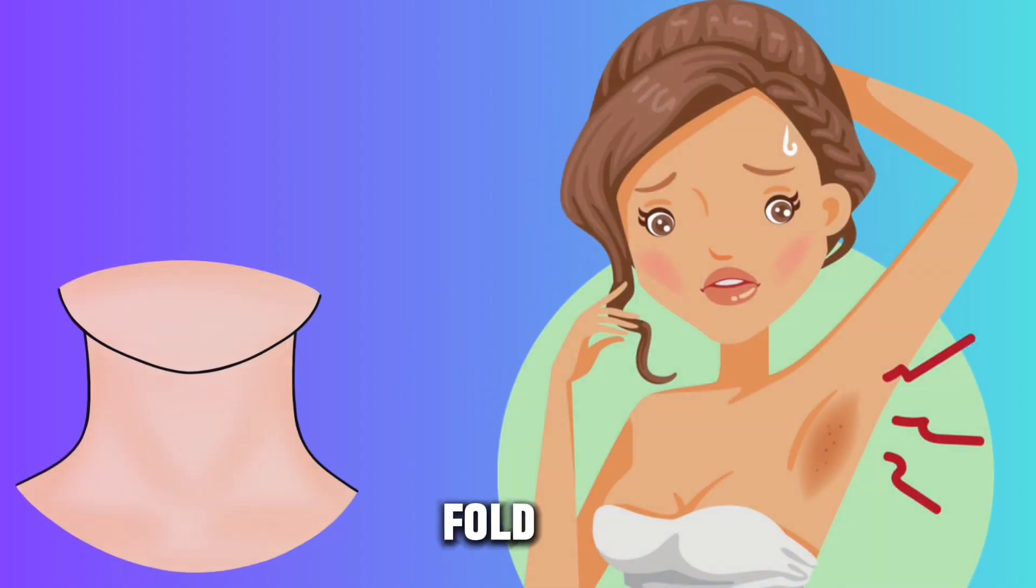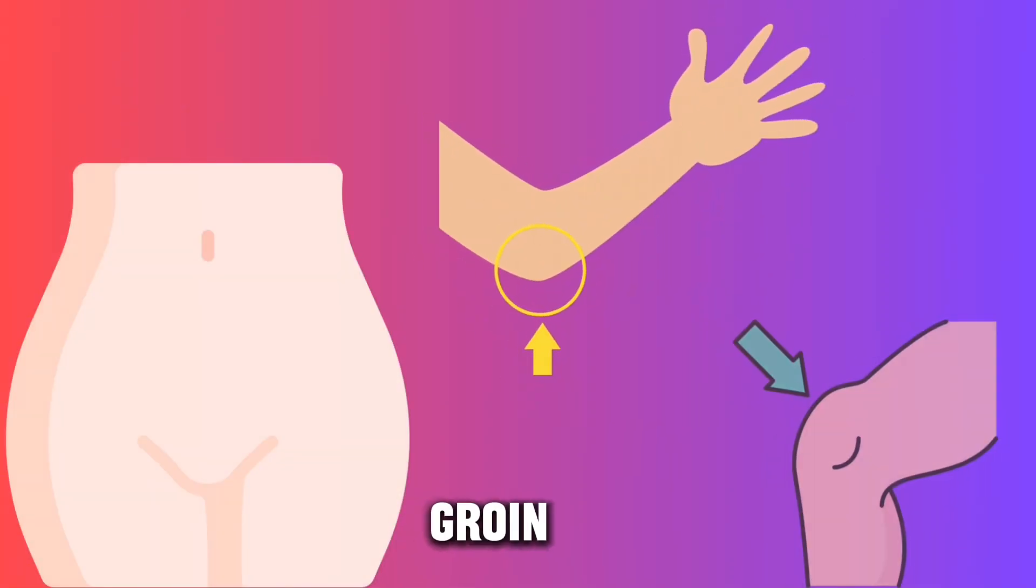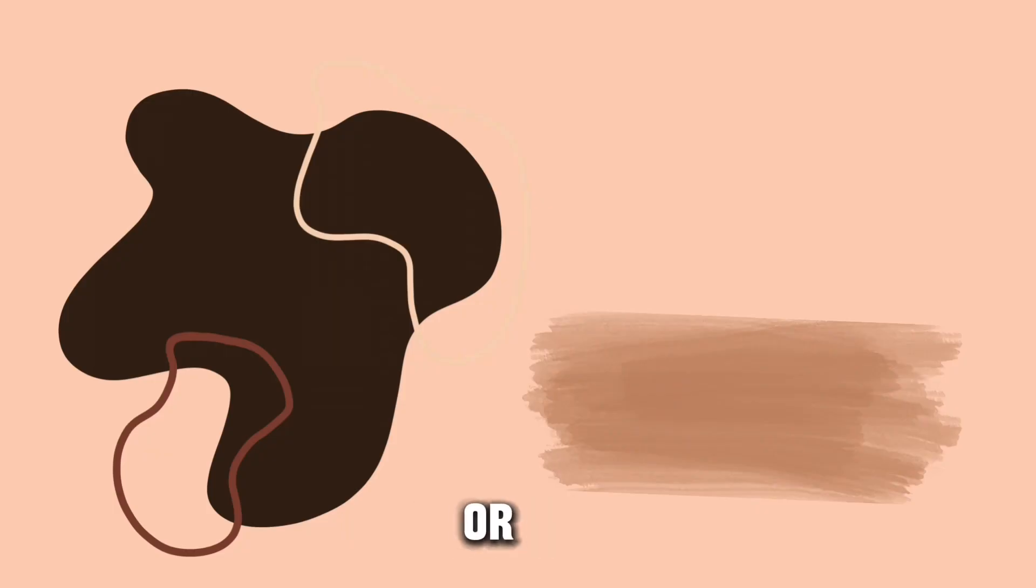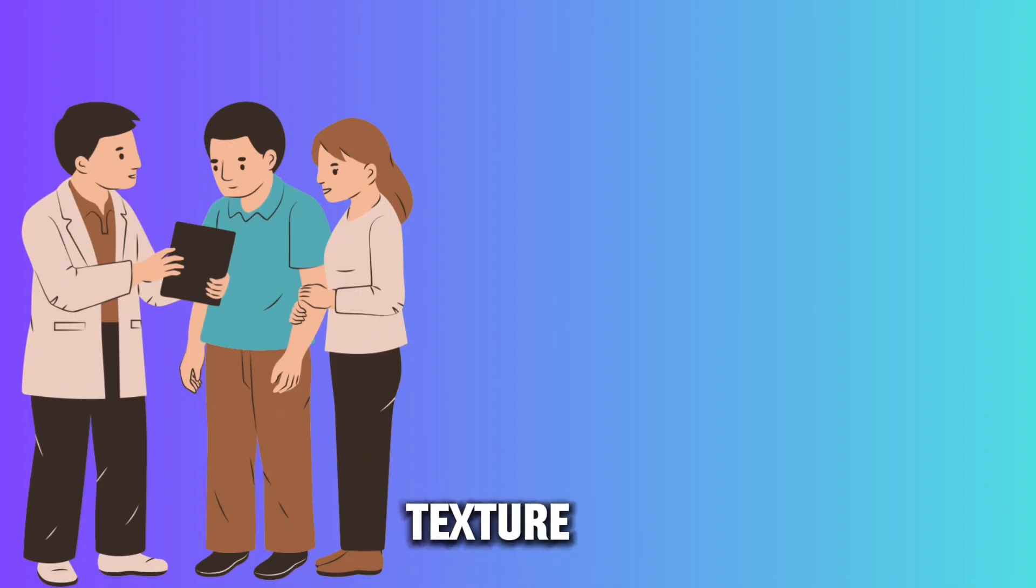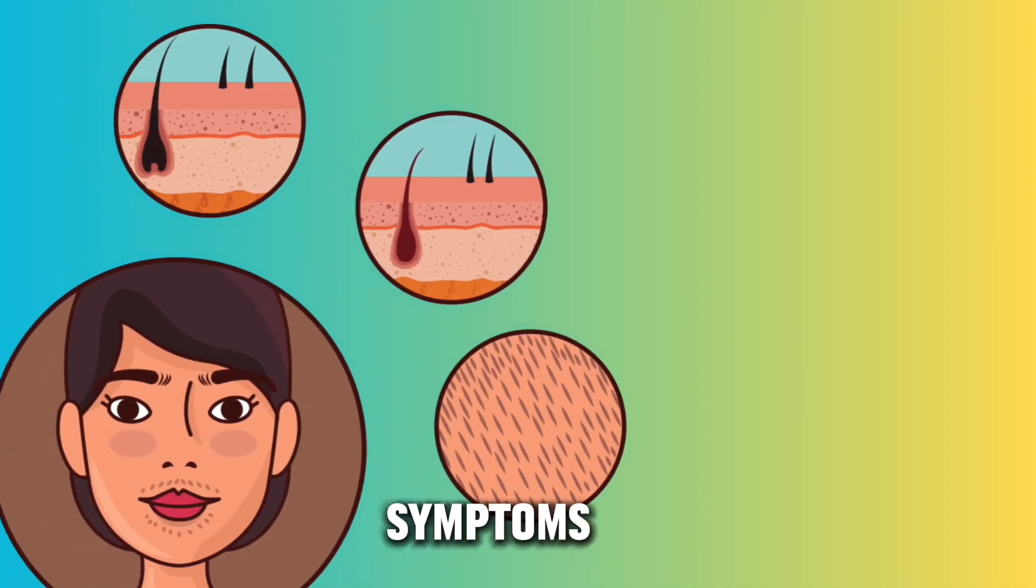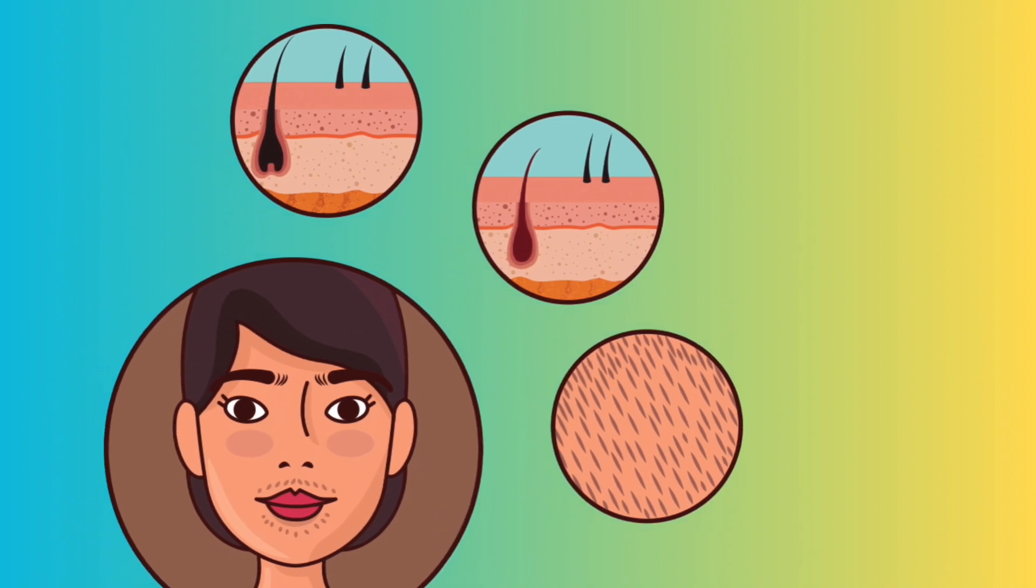They might be tan, brown, or black in color and have a velvety or thickened texture. Acanthosis nigricans doesn't usually cause symptoms beyond changes in skin appearance.